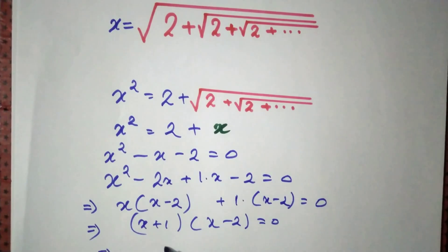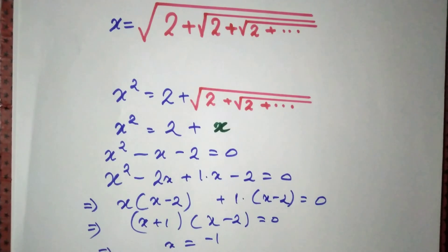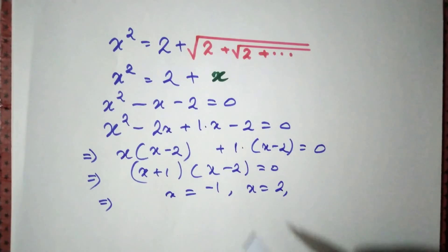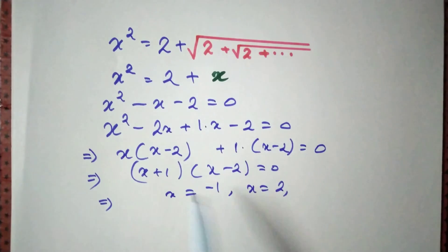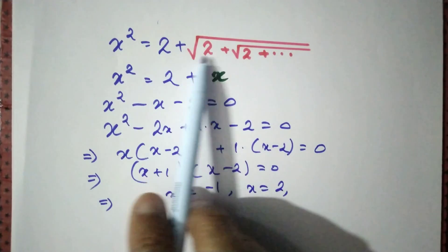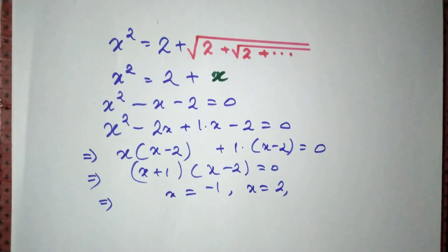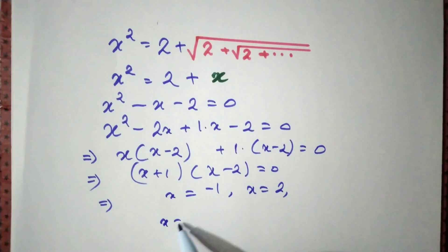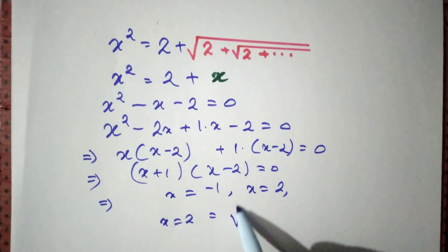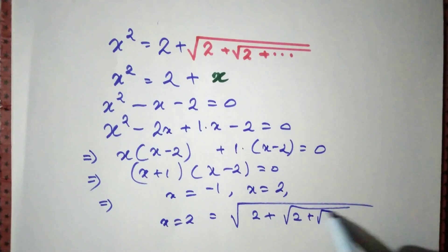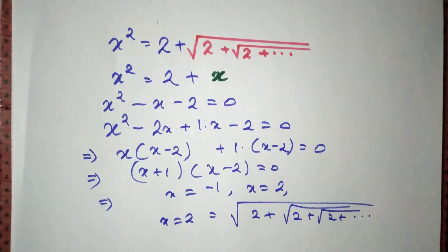That gives us either x equals minus 1 or x equals 2. Now observe that root of 2 plus dot dot dot is actually a positive quantity — it cannot be negative. So the only choice is x equals 2, and that is the value of root of 2 plus root of 2 plus dot dot dot.